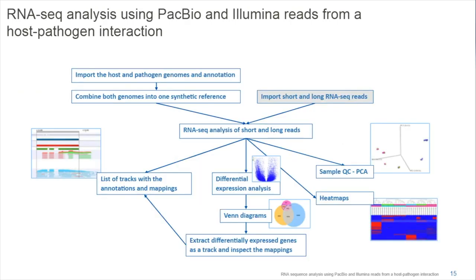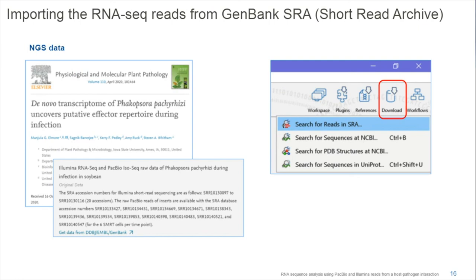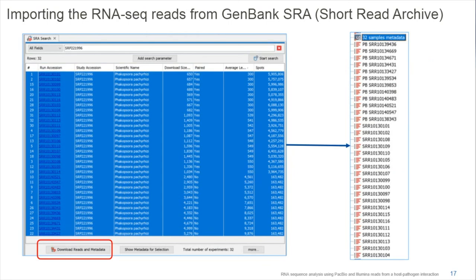Before that, I need to import my reads from the Short Read Archive. This can be done easily because the authors who published the paper provided the submission numbers. I go to the Download menu, search for sequences in the Short Read Archive, and using the project number I can select all 32 RNA-Seq files for this project and import them together with the metadata table into the workbench.